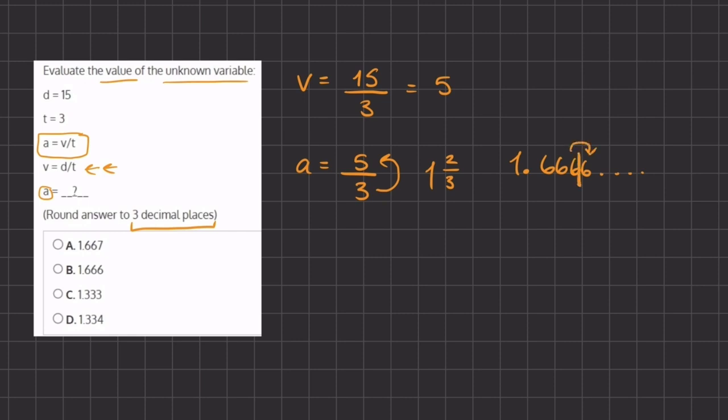...and look one place over and see that we have to round up. So we have 1.667. This is going to be our answer for the value of a, and if we take a look at our answers, that is going to be A over here.